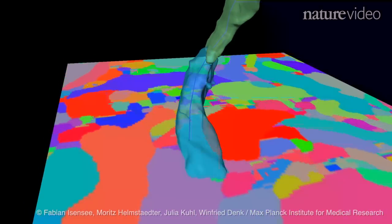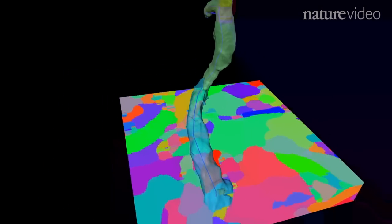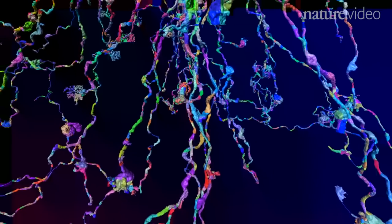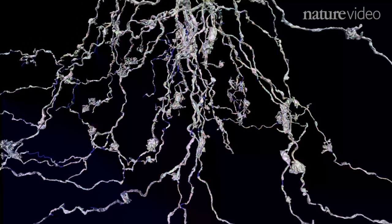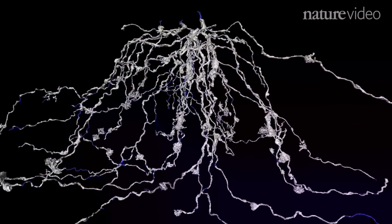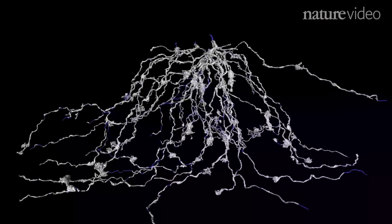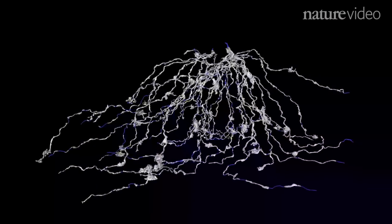But to join up the colored sections and reconstruct the long branches of each cell in three dimensions, it needed help. So 300 students spent a total of 30,000 hours carefully tracing the path of each neuron to tell the computer how to join up the colored blobs.